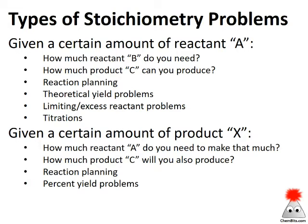What types of problems can we approach as stoichiometry problems? Anytime we're given or we know the amount of either a reactant or a product, we can use a stoichiometry approach to determine the amount of any other reactant or product in the process. A few specific problem types you'll encounter are theoretical yield, limiting reactant, titrations, and percent yield problems.